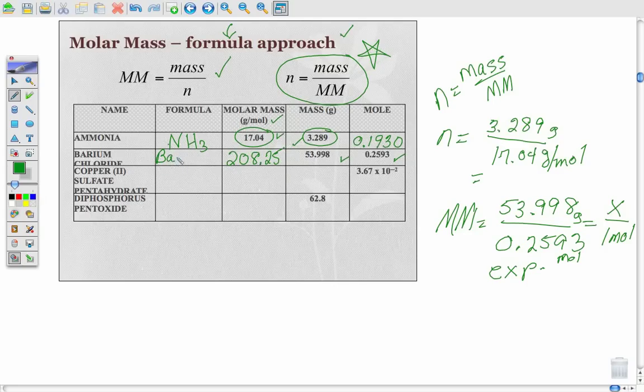I've already got the units up at the top, so I'm not going to write them down there. And again, you could also get this from the chemical formula, barium's plus two, chloride's minus one. So that's BaCl2.